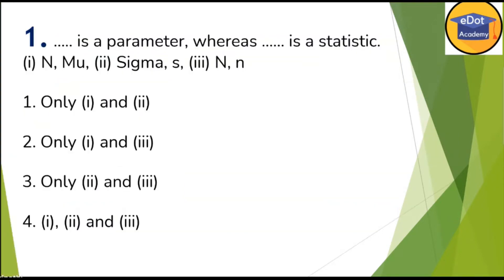Here is the first question. They have given: blank is a parameter whereas blank is a static. You have to tell which of the following pairs are parameter and static. Before giving the answer, you must know what is a parameter and what is a static.